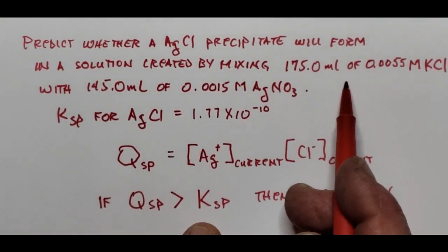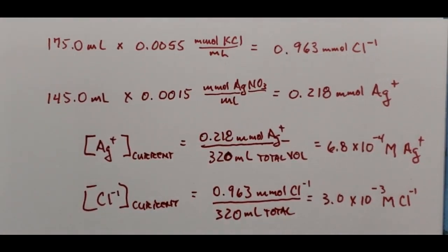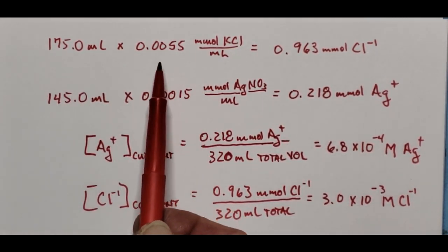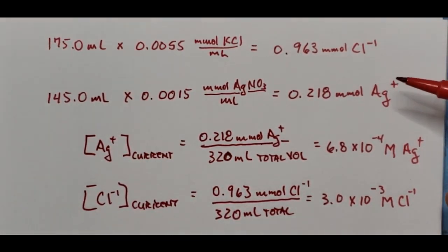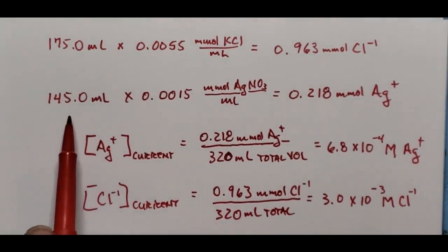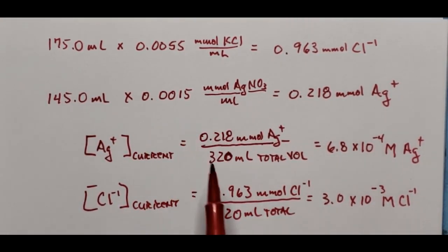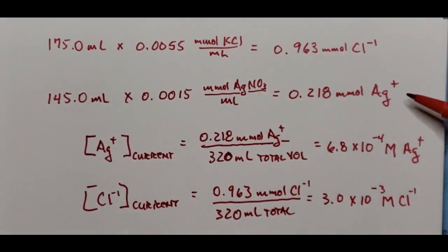Problem three on your pre-lab has you mixing sodium hydroxide with a calcium-containing solution, and you need to recalculate the current molarities to see if you've exceeded the Ksp. Now that we've gone through examples for the pre-lab, let's look at the actual experiment. In today's experiment, we're going to experimentally determine the Ksp for silver acetate. The first thing we need to do is create a saturated solution of silver acetate — a completely packed dance floor.